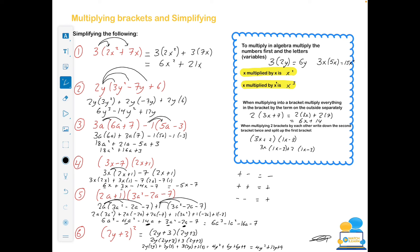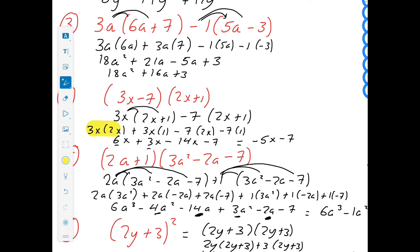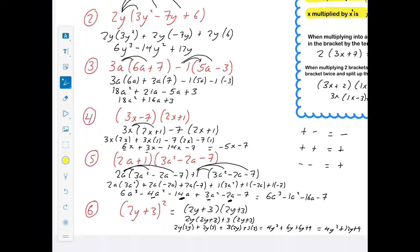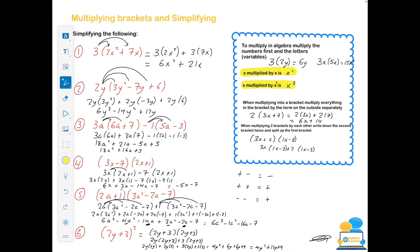Algebra really builds on each other, so we need to be able to do the simplifying to finish these questions. Once you get good at these, you can start to shorten things down — you don't have to write out every line. Sometimes writing it out fully actually confuses people more. Whatever way works for you, as long as you're getting out the right answer, it really doesn't matter what approach you take.